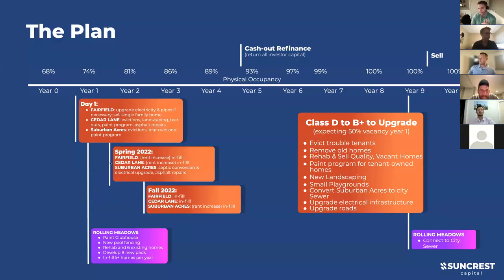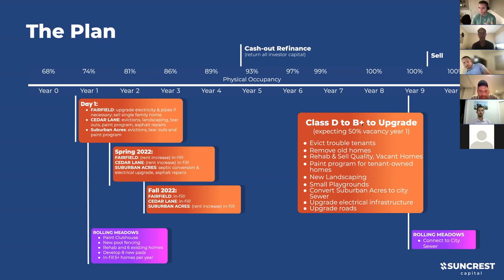Jumping into the business plan: I've broken it into two categories. The orange ones - Fairfield, Cedar Lane, and Suburban Acres - are all distressed turnaround projects. Rolling Meadows is in really great condition with some upside for improvements and infill. For upgrades, we're planning to go from Class D communities to Class B-plus. Fairfield and Cedar Lane have public utilities - city water and city sewer. Suburban Acres is on a well and septic system, but it's literally feet from city sewer.